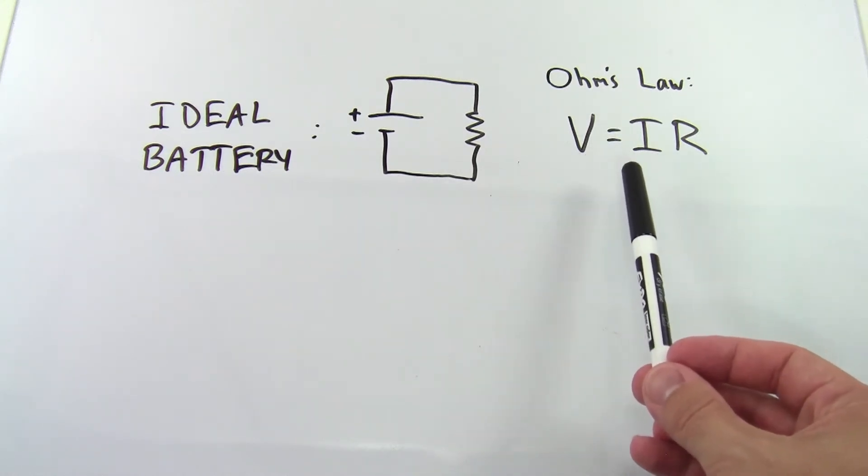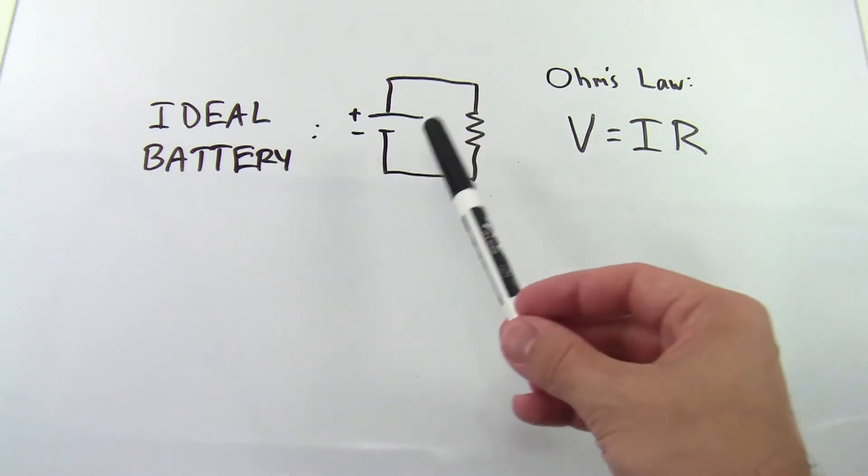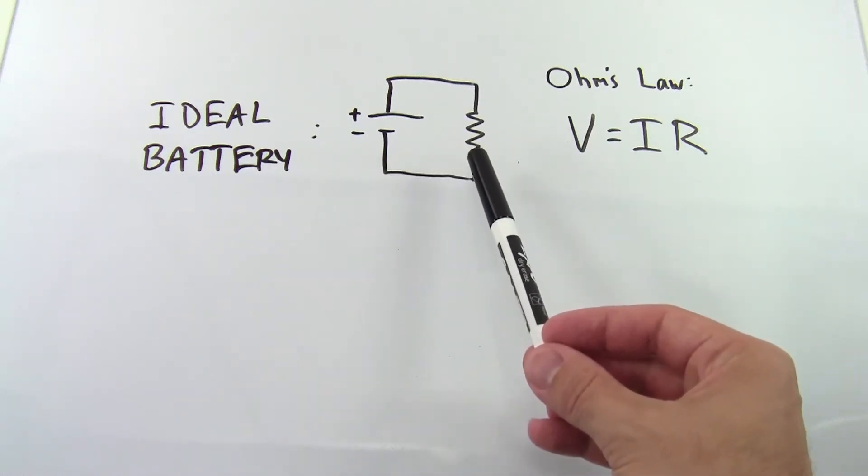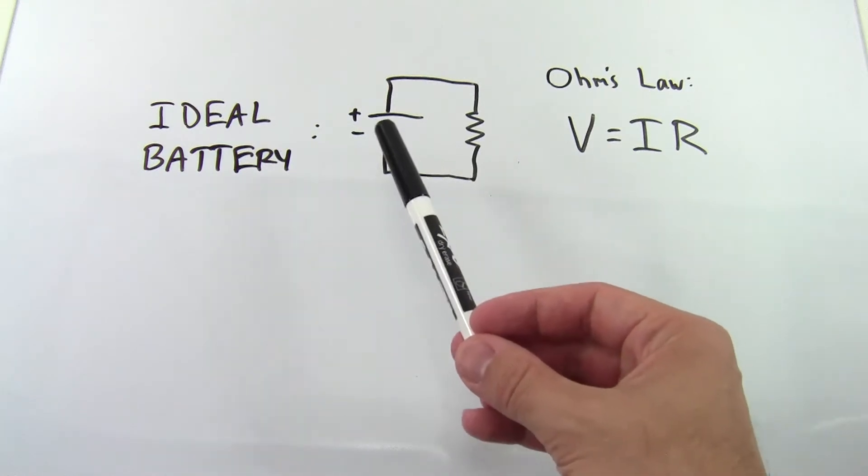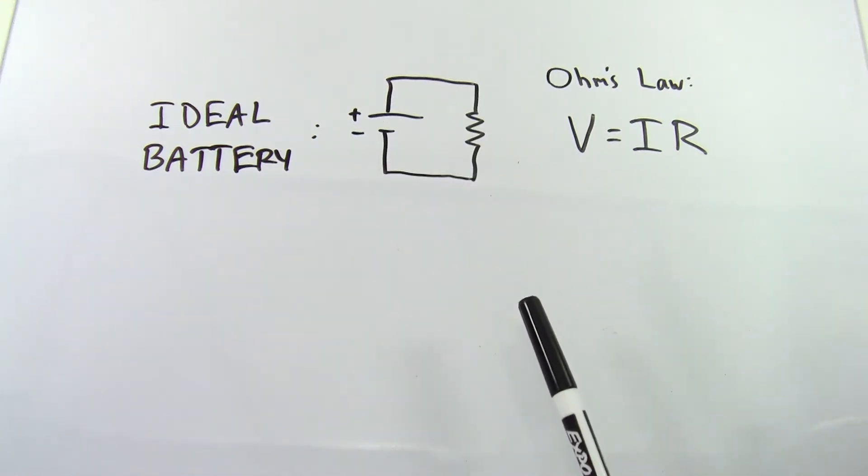So if you connect a battery to a resistor, you can calculate the current that will flow through the resistor if you know the voltage of the battery and the resistance of the resistor.